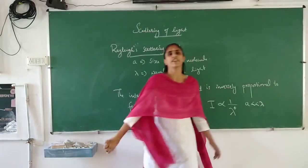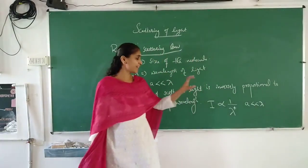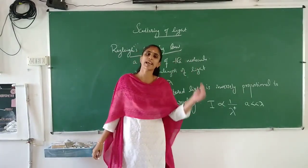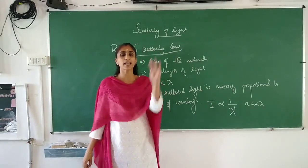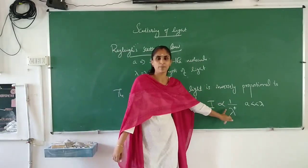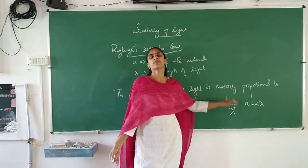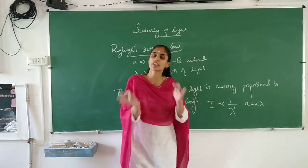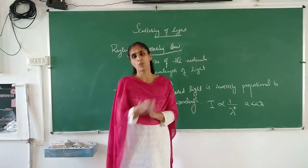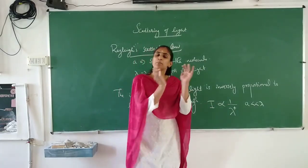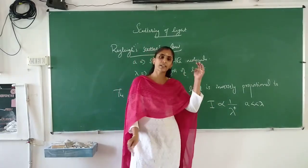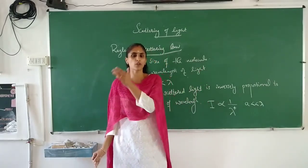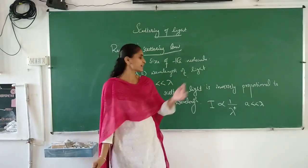Mathematically we write: intensity is inversely proportional to 1/λ⁴, provided 'a' is much less than the wavelength. In this case, selective scattering takes place — some colors will be scattered more and some less depending on their wavelength. Whichever has a longer wavelength will be scattered less, and whichever has a shorter wavelength will be scattered more. So the blue end of the visible spectrum will be scattered more in comparison with the red end.